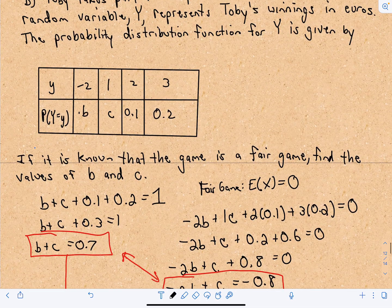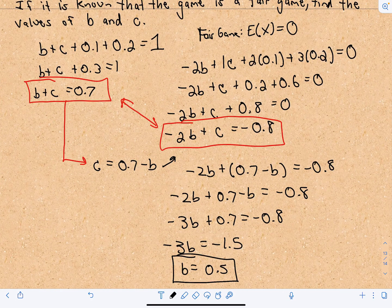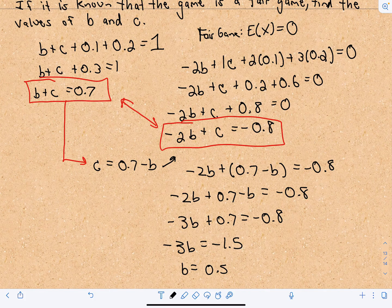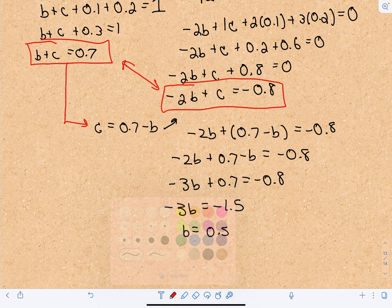And again, if you think about it, these are probabilities, so they certainly have to be something positive. And it does work out to be something positive. And now, again, if I use this equation from a second ago, we said that B plus C had to equal 0.7.